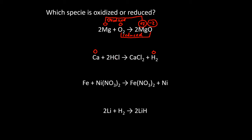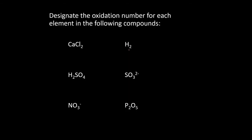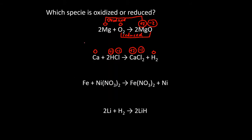HCl has a sum of zero for its oxidation numbers. Hydrogen is the first thing we come across, so it would be plus one, which means the chlorine must be minus one. Over here, the calcium is going to be plus two based on rule four, and the chlorine is going to be minus one — it's actually the same molecule we saw earlier. So if we look at what happened: calcium went from zero to plus two, hydrogen went from plus one to zero, and chlorine did nothing.